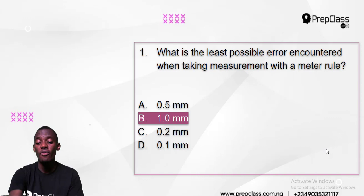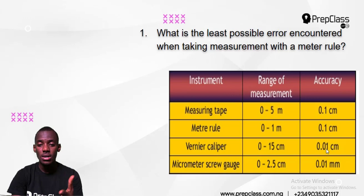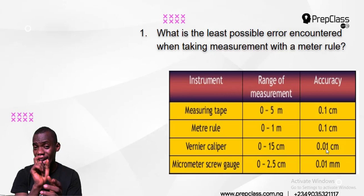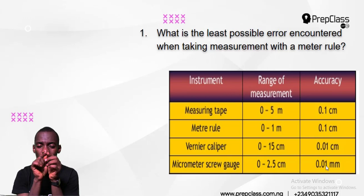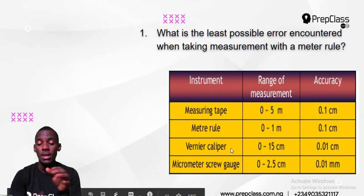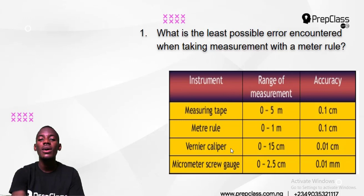They are all instruments for measuring length: meter rule, caliper, micrometer, measuring tape. Micrometer is for measuring very small length — extremely tiny, like the thickness of a book or a test tube. That's why its accuracy is 0.01. Caliper is used for measuring cylinder shapes, while meter rule is for measuring short length, while tape rule is for measuring long length.